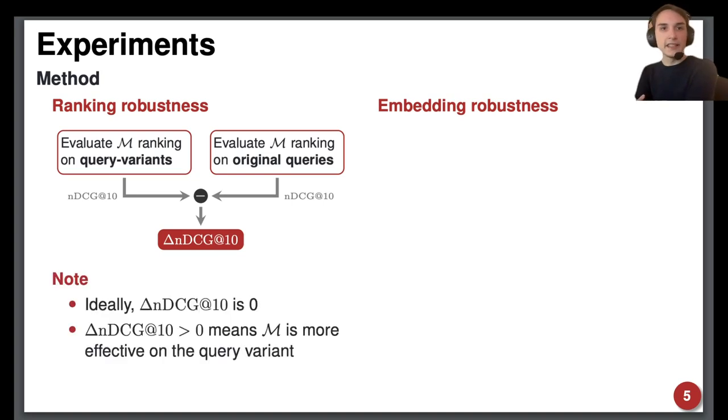This delta NDCG should ideally be zero since the model should be equally effective on the variations and the original query. If delta NDCG were positive, it would indicate that the model performs better on the query variant.